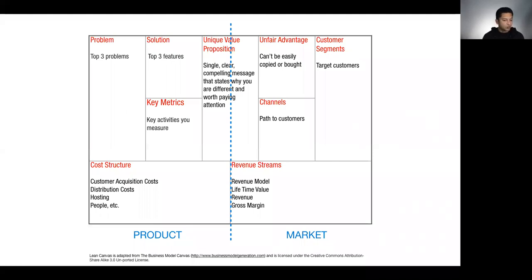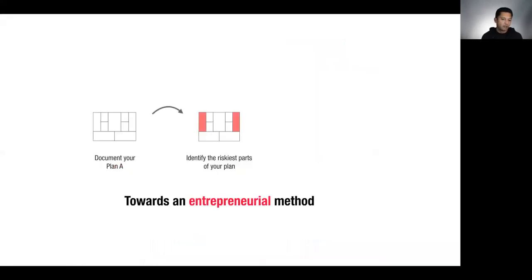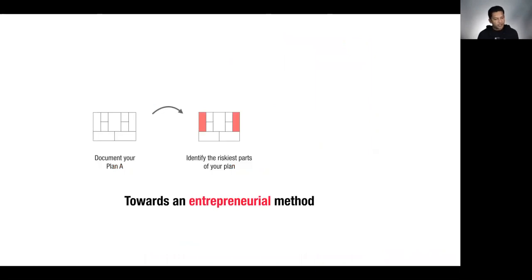We can use a tool like the Lean Canvas not just to describe a simple business model but also more complex, multi-sided marketplace types of models — you may need multiple canvases, but you can model those interactions. The power of these tools is that they're not meant to describe things with certainty, but to give you a better working model which you can then begin to test.